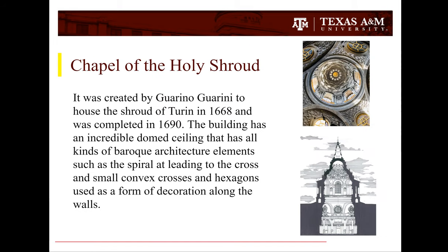The Chapel of the Holy Shroud was created by Guarino Guarini to house the Shroud of Turin in 1668 and was completed in 1690. The building has an incredible dome ceiling with all kinds of Baroque architecture elements, such as the spiral leading to the cross and small convex crosses and hexagons used along the walls as a form of decoration.